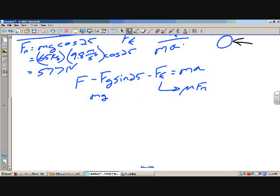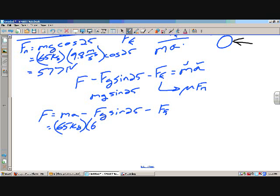Fg is just mg sine 25. I know a value for M, and I know a value for A. So at this point, I'm just going to rewrite this equation, bringing this weight term and this friction term over to the other side. I've got Ma minus Fg sine 25 minus my frictional force, 65 kilograms, 9.8 meters per second squared.